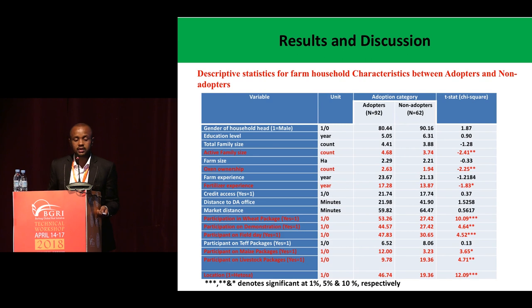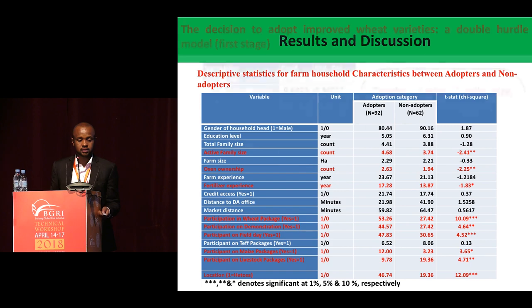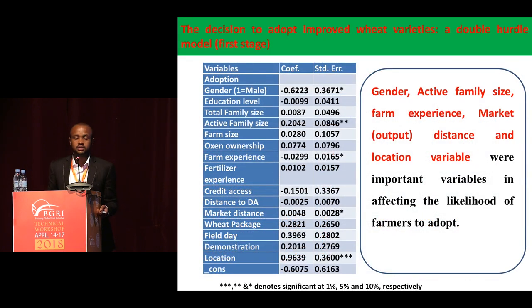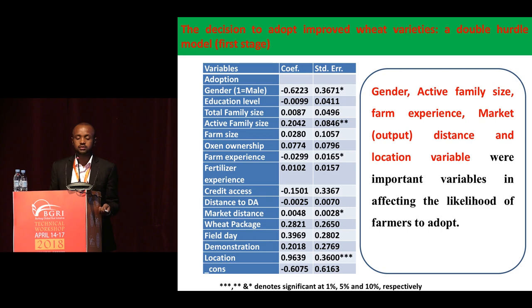For instance, in terms of family size, adopters have on average about 4.6 — roughly 5 family members — compared to non-adopters, and this difference is significant. When we come to the adoption decision, we found about 5 significant variables: gender of household head, active family labor, farming experience, output market distance or proximity to market, and agricultural location classification. These variables were found to be important in affecting the likelihood of farmers to adopt.